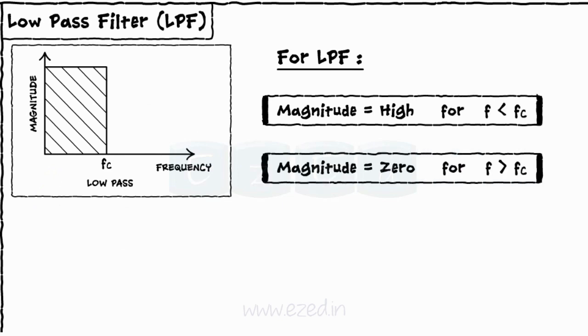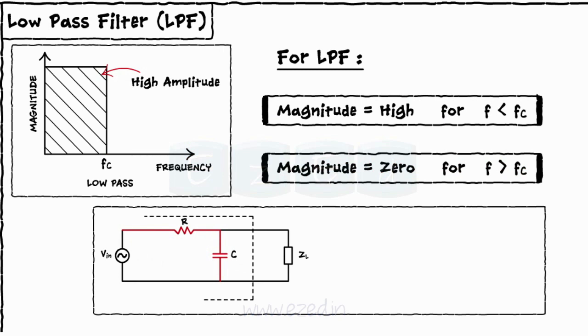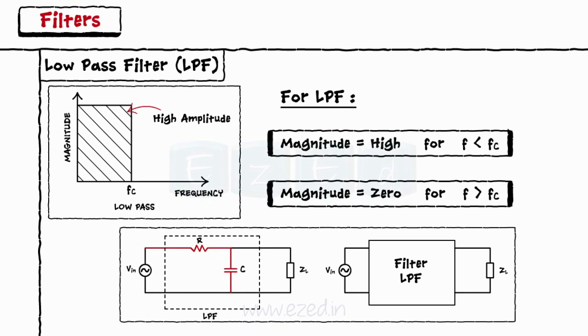Low pass filter passes all the frequencies below cutoff frequency and blocks all higher frequencies. Thus, we get high amplitude for frequencies below cutoff frequency and zero amplitude for frequencies above cutoff frequency. When we connect a resistor and a capacitor in series as shown here, we get a low pass filter.